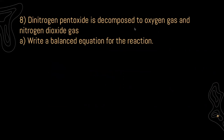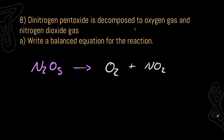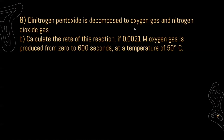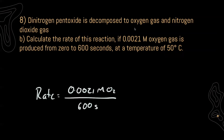For eight, dinitrogen pentoxide is decomposed to oxygen gas and nitrogen dioxide gas. Part A: write the balanced chemical equation. Part B: calculate the rate if 0.0021 molar oxygen gas is produced from 0 to 600 seconds at 50°C. Temperature affects whether the rate speeds up or slows down, but the base rate calculation remains the same. Using change in concentration over change in time, I get a rate of 4 × 10⁻⁶ molar per second in terms of oxygen gas.